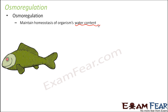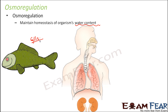One example where osmoregulation can be very distinctly seen is fishes. Fishes have gills, and these gills help to excrete out salt, which is how they maintain the right amount of water inside the body. Similarly, in human beings, kidneys help in osmoregulation by removing all the unwanted impurities within the body while ensuring the right amount of water is present inside.